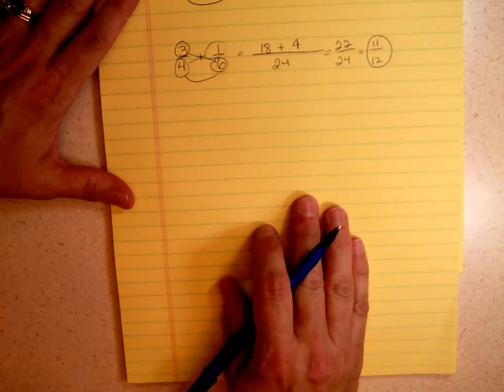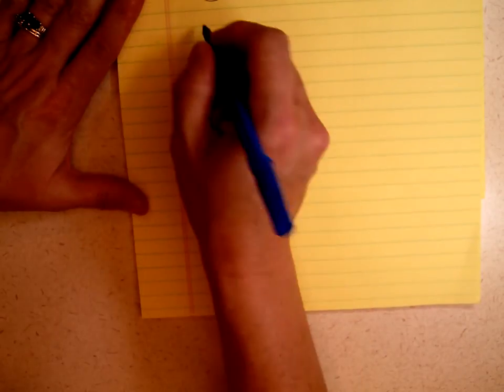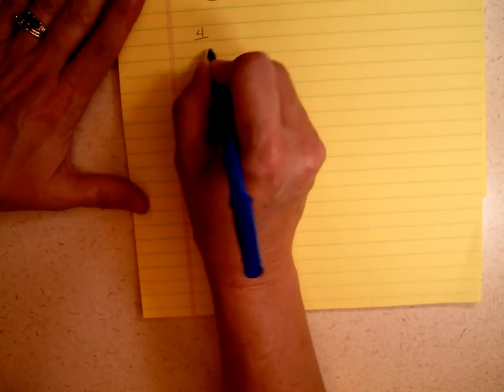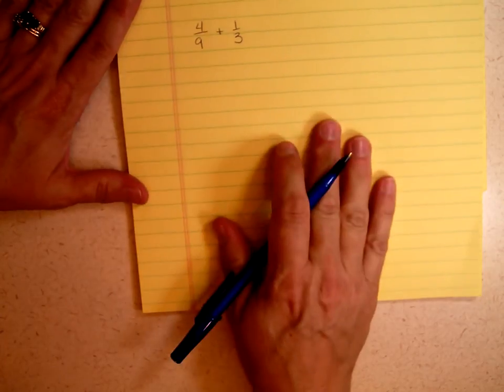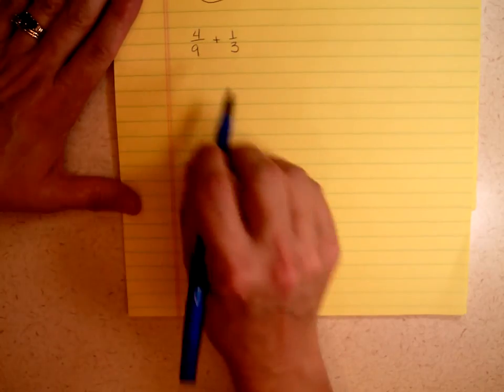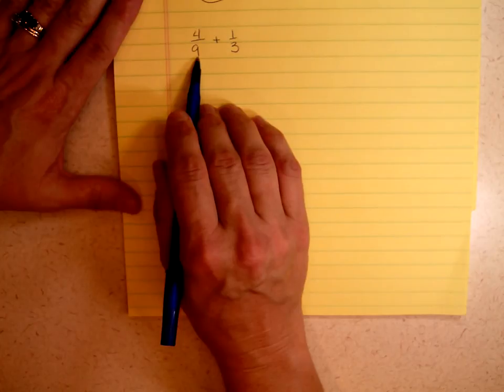Sometimes it's a little more complicated, sometimes it's a little less. Let's try another problem. I have 4 ninths plus 1 third. Now I'm going to look at that problem, and I'm looking at the 9 and the 3, and I see that 3 is a factor of 9.